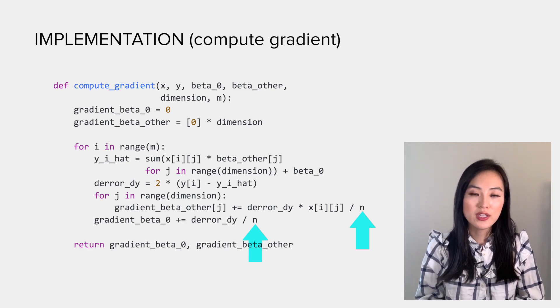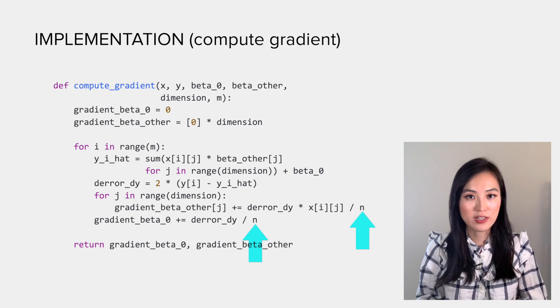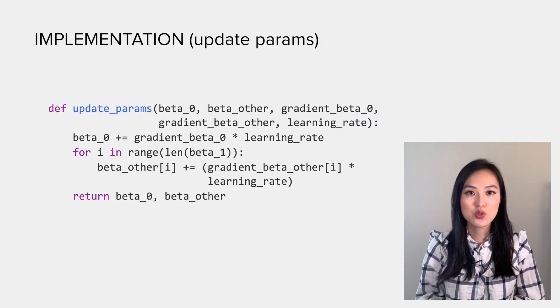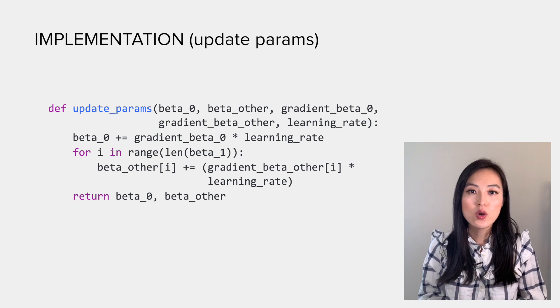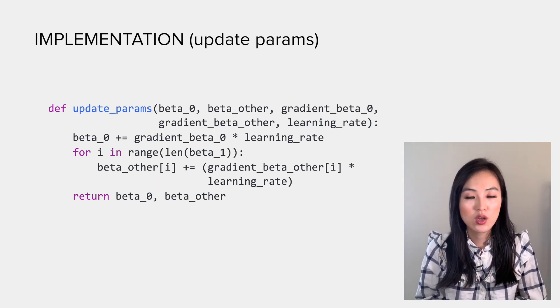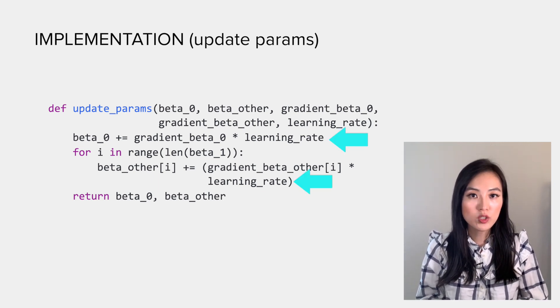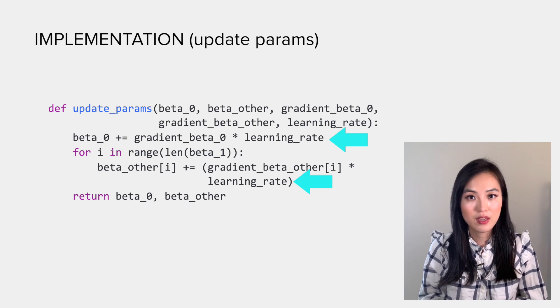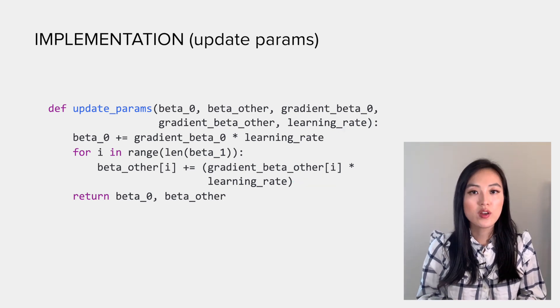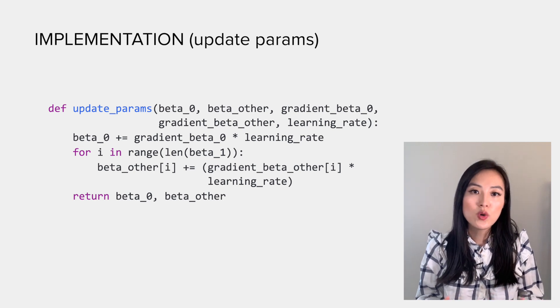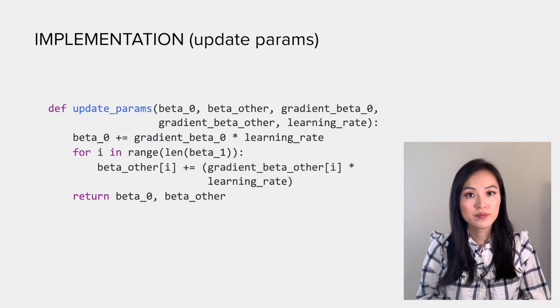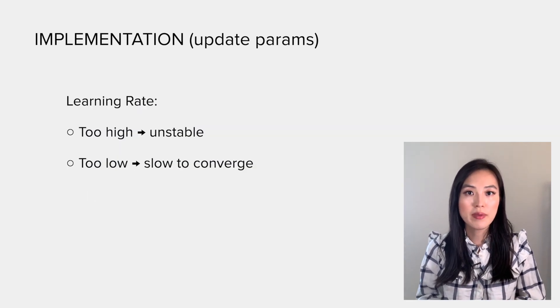The next step is to update betas using the gradients we just obtained. Note that we don't simply add gradients to betas; we scale the gradient by multiplying the learning rate. The learning rate is the rate of speed where the gradient moves during gradient descent. We don't want it to be too high or too low. Setting it too high would make the gradient descent process unstable; too low would make it slow to converge.